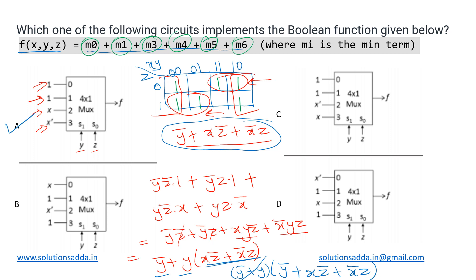We could check the other three options, but since this is an MCQ with only one correct answer, option A is the correct answer as it correctly implements the given function.